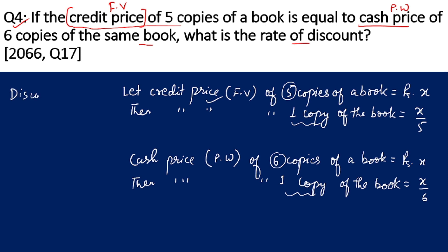Let the credit price of 5 copies of a book equal rupees X. The question states that the credit price of 5 copies equals the cash price of 6 copies. So the credit price of one copy is X/5, and the cash price of one copy is X/6. We need to convert to the same unit. To find the discount or true discount, we use FV minus present worth. So FV is X/5, present worth is X/6. Taking LCM of 5 and 6, which is 30, cross multiplying gives 6X minus 5X, which equals X/30. This is the discount.